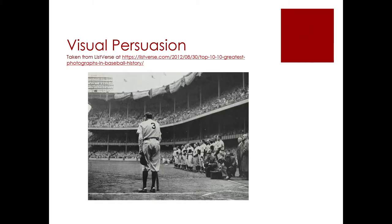One of my favorite pictures — this is a famous picture from baseball history. I ask who this is, and a lot of people say Babe Ruth. That's right. How do you know? Because of the number three in the pinstripe Yankee uniform. If you know the old Yankee Stadium, you can recognize it from the flourishes and construction. This is from the end of Babe Ruth's career — he looks older, and he's leaning on his bat, using it almost like a crutch. You can tell he's leaning forward with the bat on the ground.